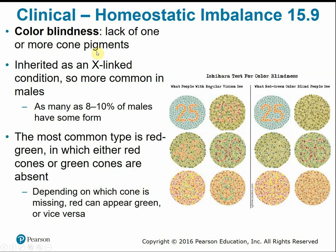Color blindness is when an individual lacks one or more color cone pigments. It's inherited as an X-linked condition, so it's more commonly seen in males — estimated up to 10% of males have some form of color blindness. The most common type is red-green, in which either the red or green cones are absent, causing those colors to appear similar. The Ishihara test is used to detect color blindness.